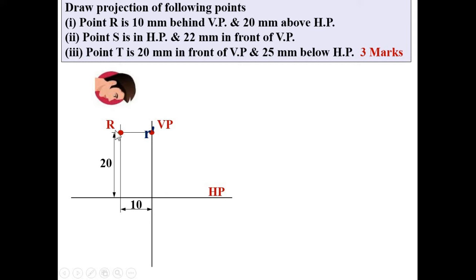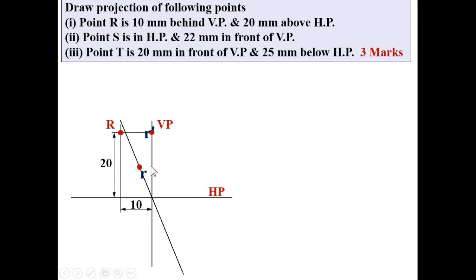Now the observer changes position to look from above - this gives the top view, sometimes known as the plan. From this direction, the projection is on HP. If the projection is on HP, it is denoted with small r (no dash). Small r appears here on HP, and it is 10 mm from the vertical line. Since HP is always rotated in the clockwise direction, after rotating, r moves to its new position. This distance remains 10 mm. This gives the projection of point R: R' and r.